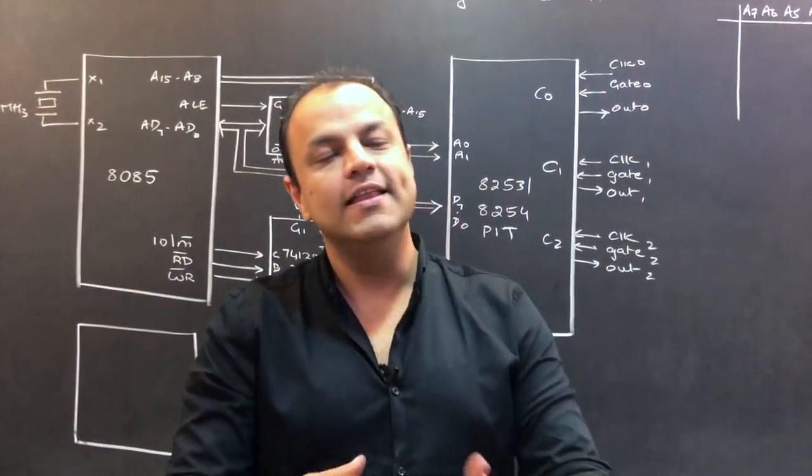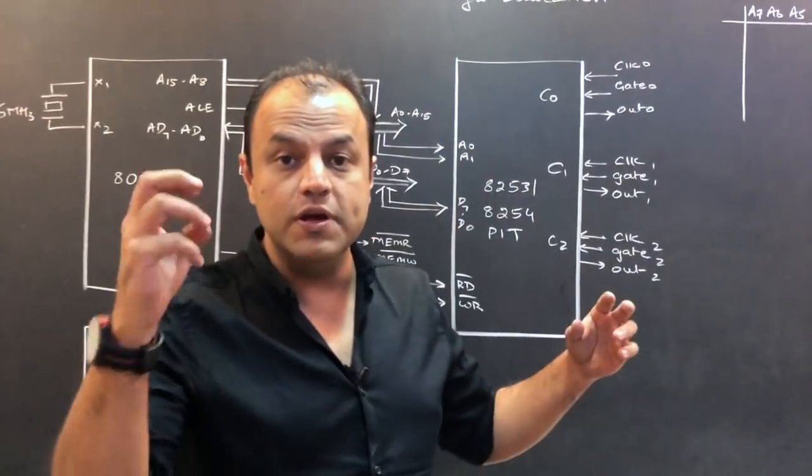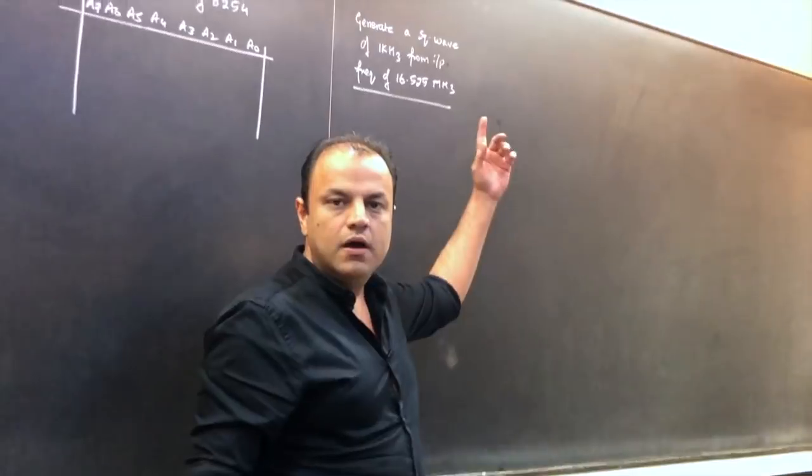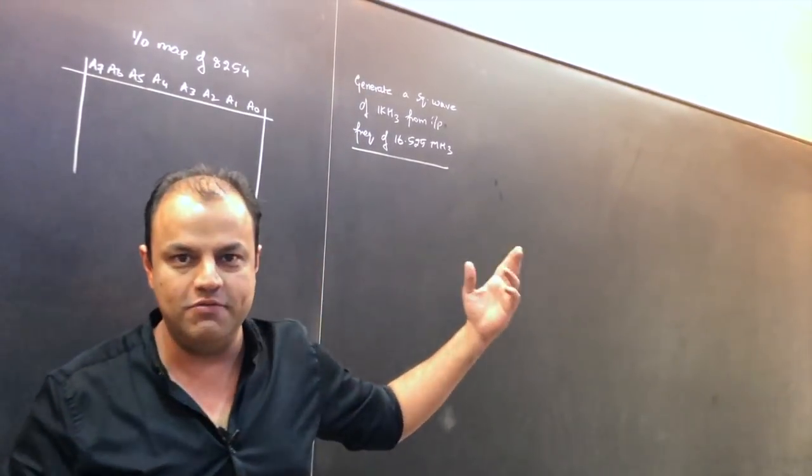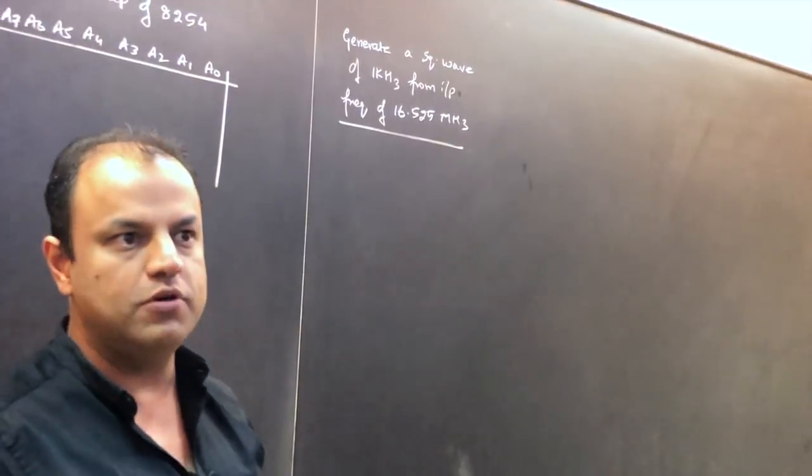So is it interesting? That's just one of the examples. There's so many other things you can do. There are continuous modes. In continuous modes, you can produce waveforms. We're also going to do in the same video a program to generate a square wave frequency, a frequency of 1 kHz from an input frequency of 16.525 MHz.